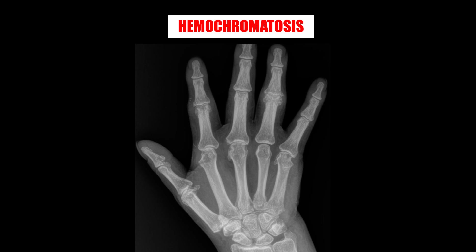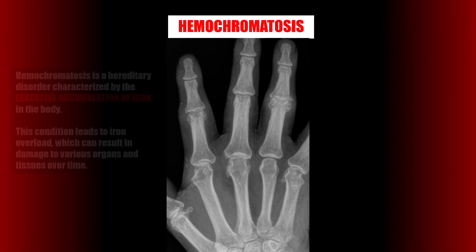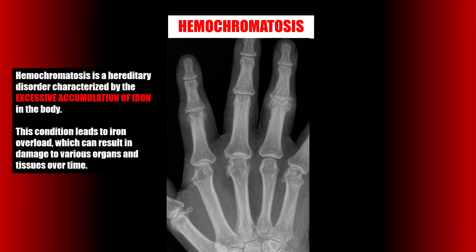Case number ten is an example of hemochromatosis. Radiographic findings consistent with hemochromatosis include the deposition of iron deposits within the soft tissues as well as hook-like osteophyte formation on the digits. Hemochromatosis is a hereditary disorder characterized by the excessive accumulation of iron in the body, leading to iron overload which can result in damage to various organs and tissues over time.